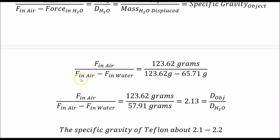We measured 123.62 grams for the object in air, and the difference in mass between air and water is 57.91 grams. The 123.62 grams is the mass of the object, and 57.91 grams is the mass of the water displaced. Their ratio gives us the specific gravity: we get 2.13.